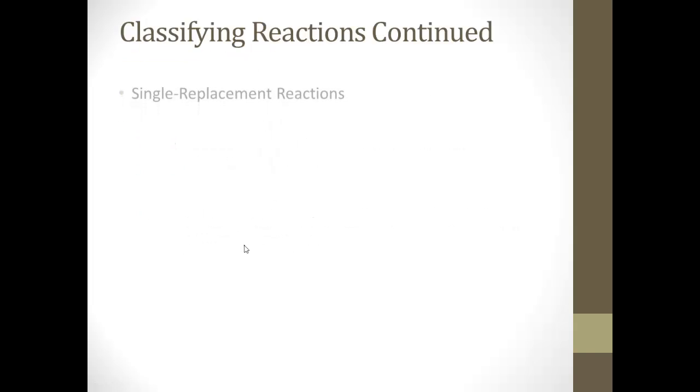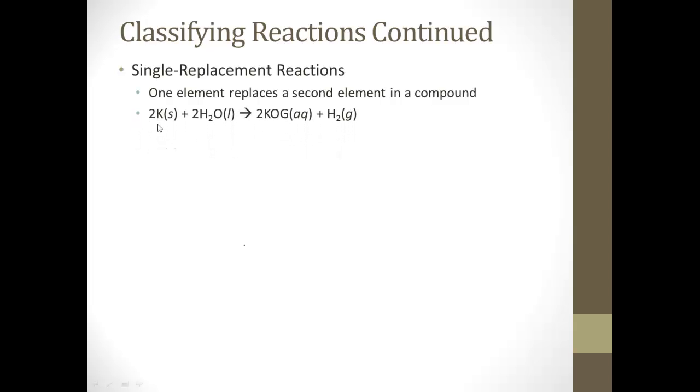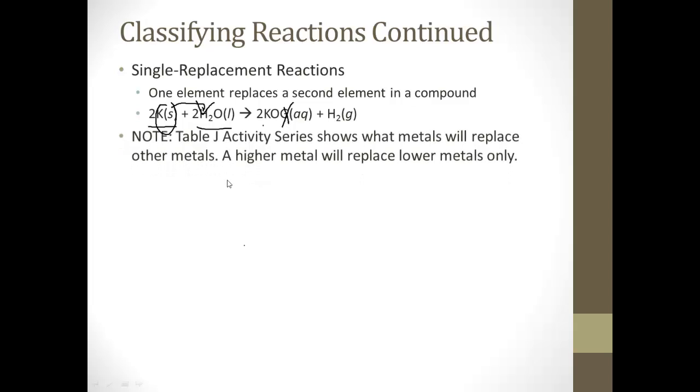Continuing along, we have replacement reactions. The first one is a single replacement, where one element replaces a second element in a compound. Here, if you have potassium and water, that should be 2KOH, the potassium is replacing the hydrogen. We end up with potassium oxide and hydrogen. The potassium just kicked the hydrogen right out.